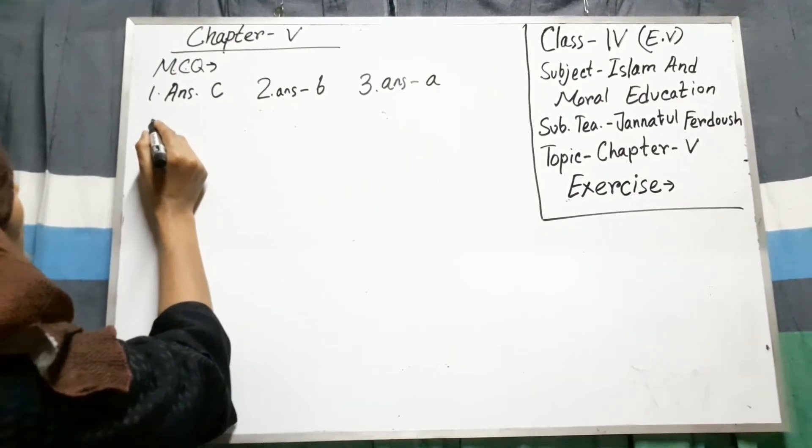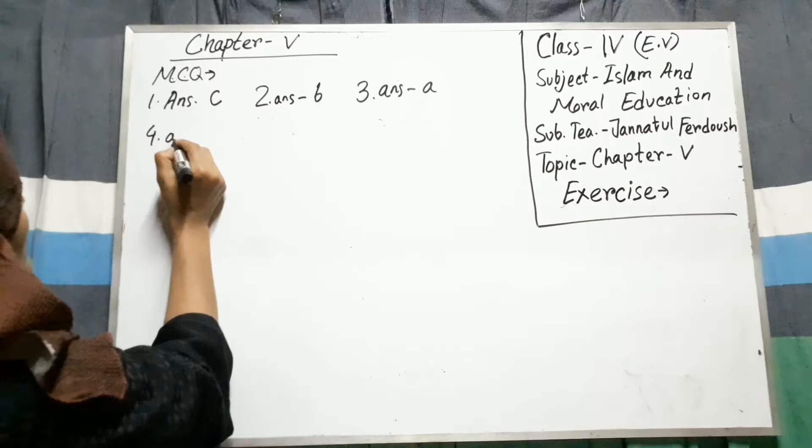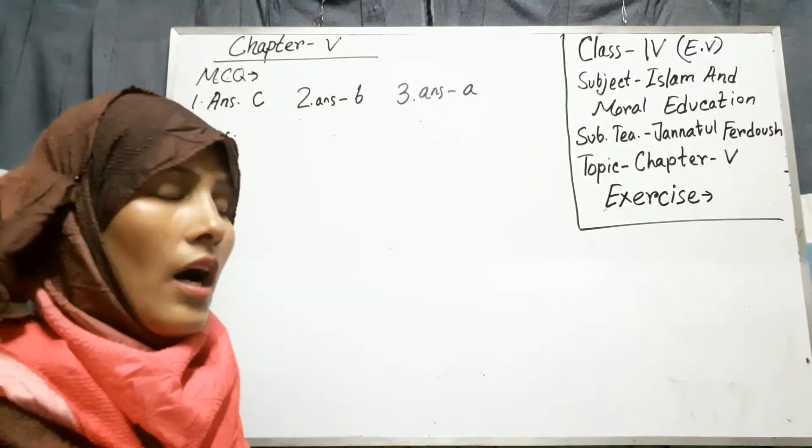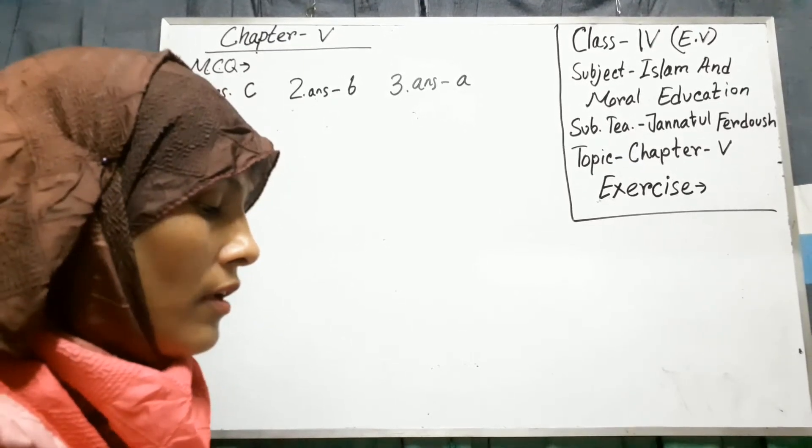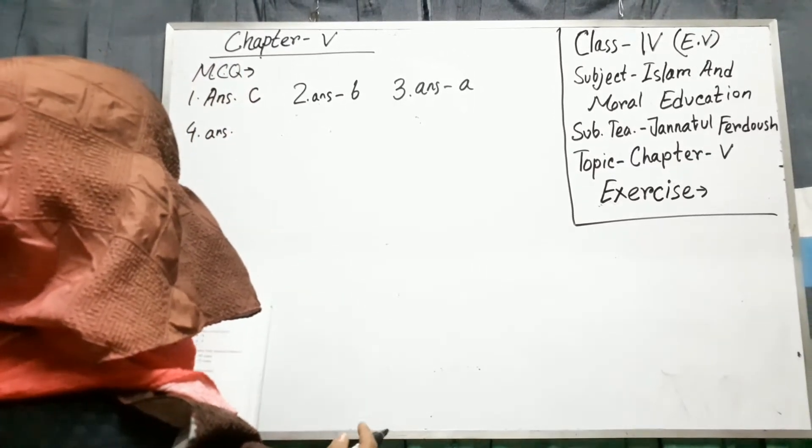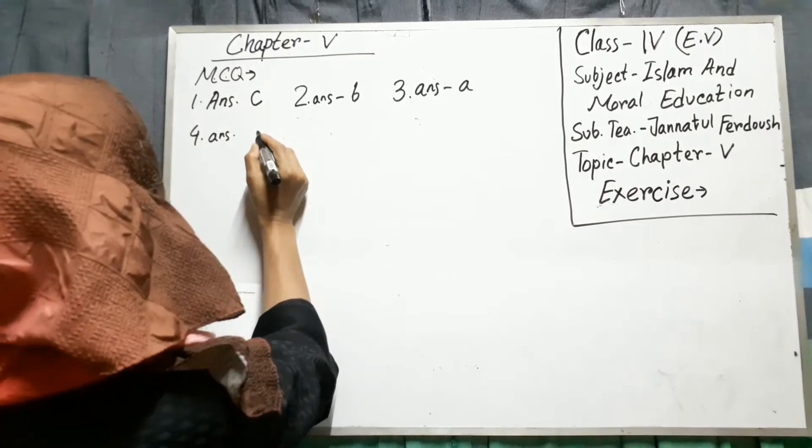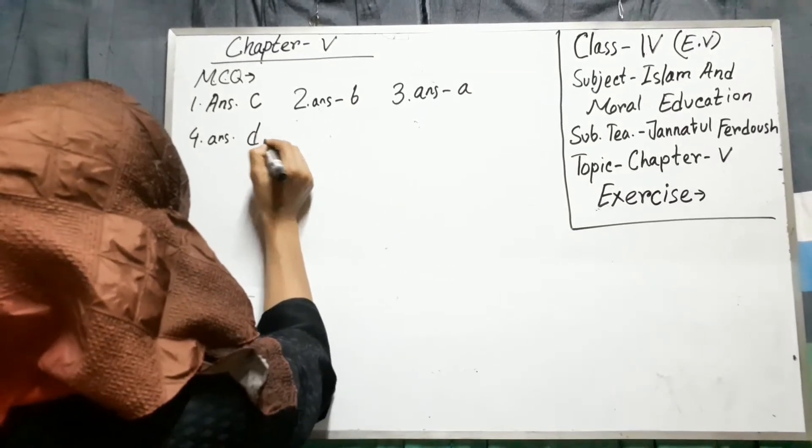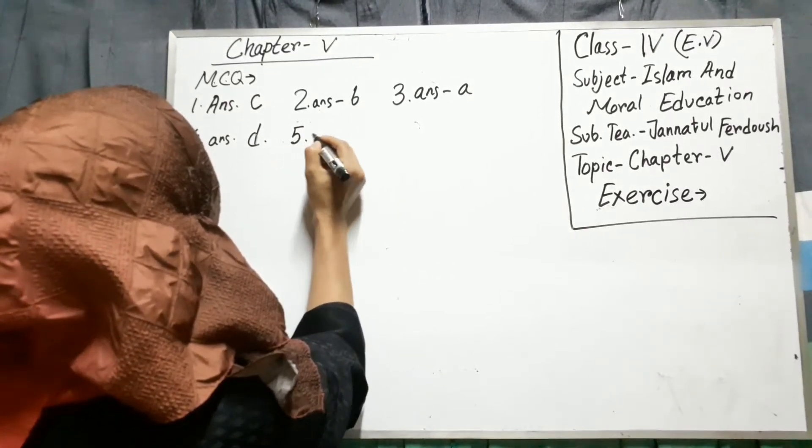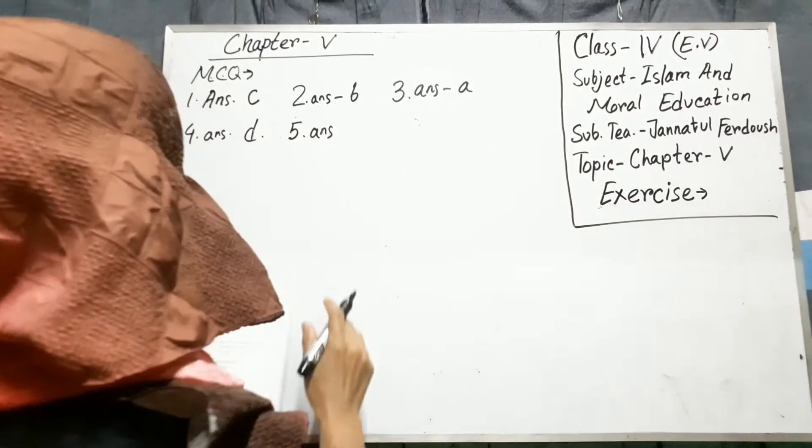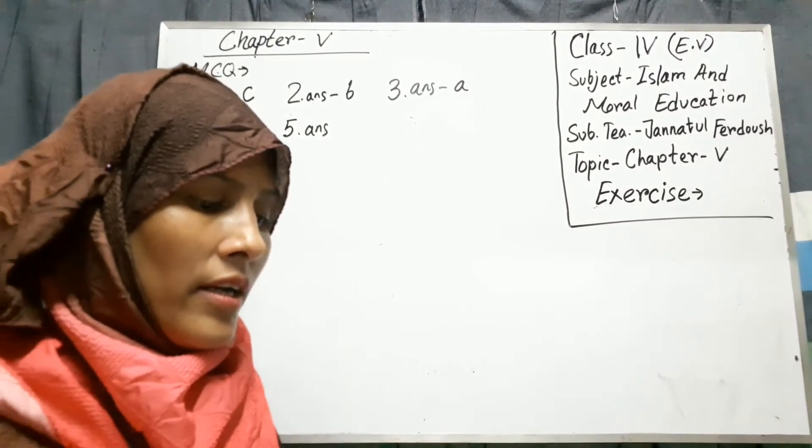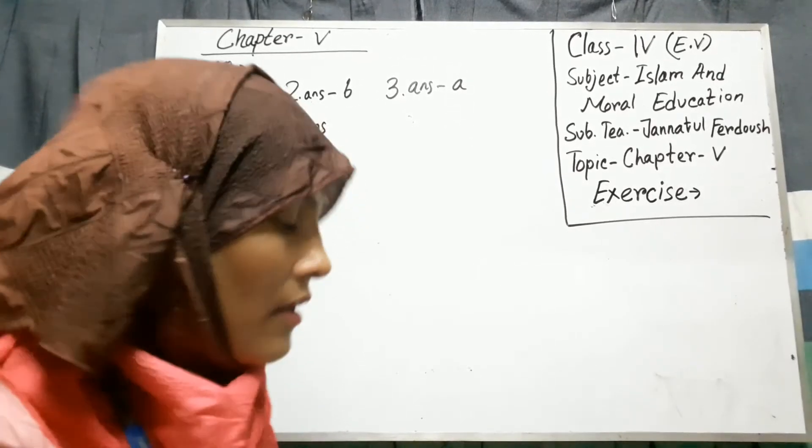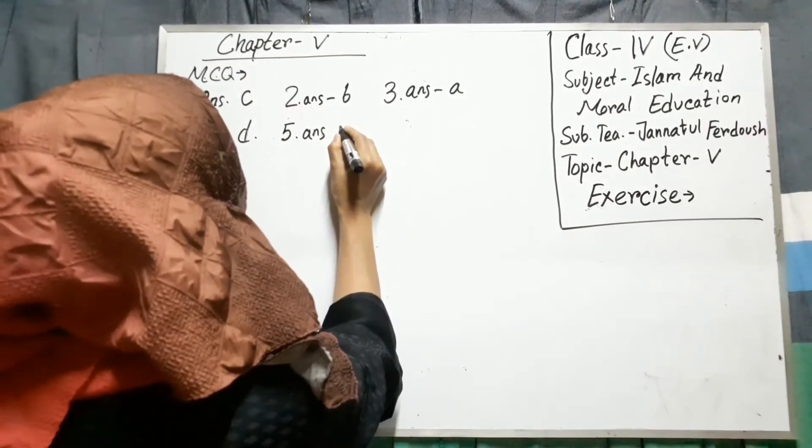Number 4. How many years continued Hilful Ujul? 50 years. Answer. 50 years. Answer D. Number 5. How many ayats of Surah Alak were revealed first? C. Write. 5 ayat.